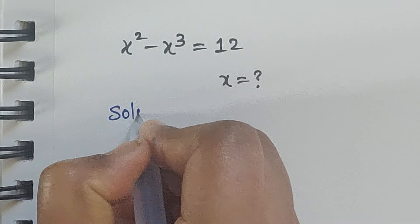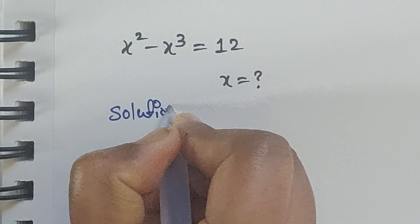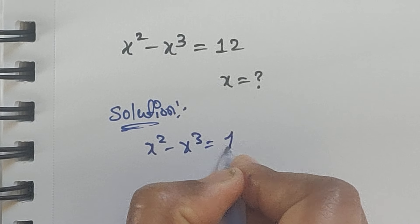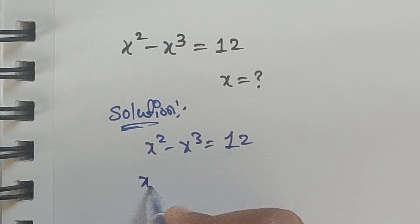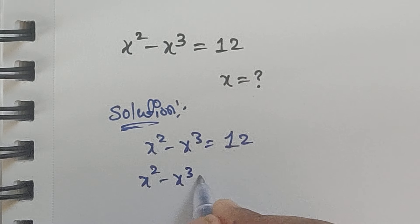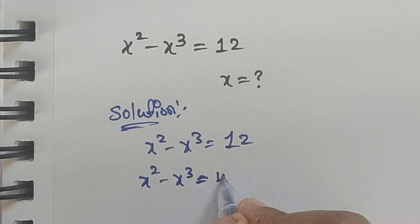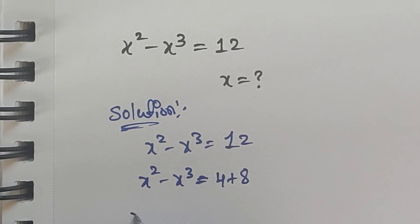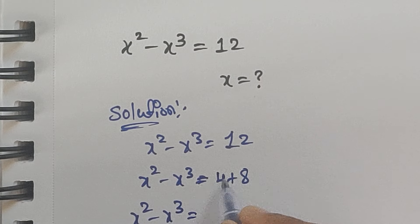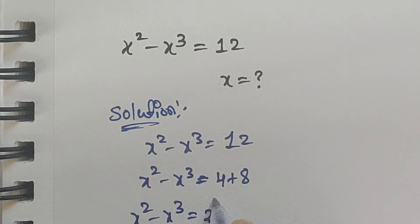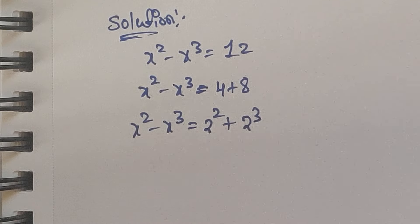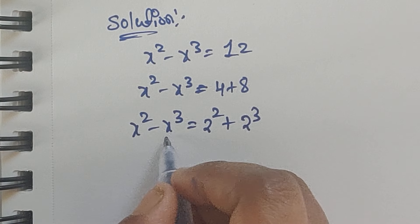Solution: x squared minus x cubed equals 12. We can write 12 as 4 plus 8. So 4 we can write as 2 squared, and 8 we can write as 2 cubed.